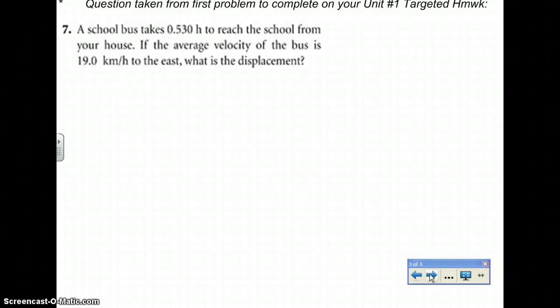What we are going to do next is actually apply this to some of your targeted homework problems. These are questions that are literally right out of your unit one targeted homework. For instance, let's look at question number seven together. Question number seven says, a school bus takes 0.530 hours to reach the school from your house. If the average velocity of the bus is 19.0 km per hour to the east, what is the displacement?